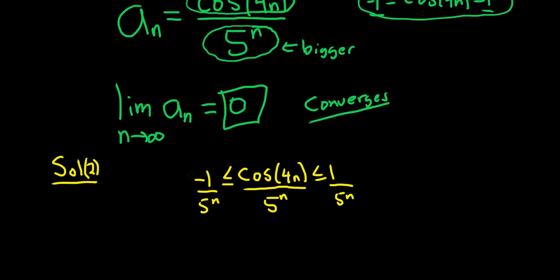Then you can notice that this piece here goes to 0 as n goes to infinity. Likewise, this piece here goes to 0 as n goes to infinity. So therefore, the piece in the middle will also go to 0 as n goes to infinity by the squeeze theorem.